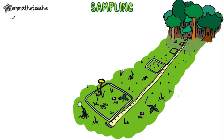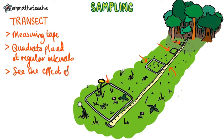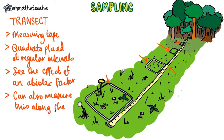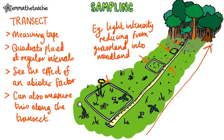The second method of sampling is a transect. We're going to look at line transects. This is just a measuring tape that is stretched between two points with quadrats placed along it at regular intervals, like every 5 meters. It allows you to see the effect of an abiotic factor on the organism distribution, and you can also measure this factor along the transect. For example, light intensity reducing from a grassland into a woodland. And you might predict that there'll be a big change in the distribution and variety of organisms found, as there'll be different amounts of photosynthesis able to take place in each area.